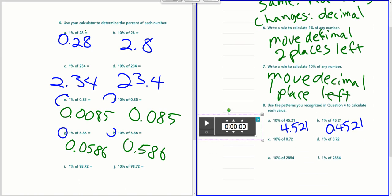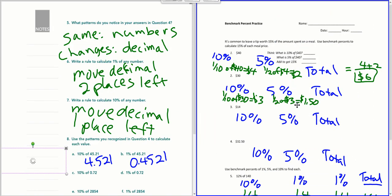And so then we jump to the worksheet. Skipped over a few pages in the book. But basically what we're doing is we're using these benchmark percents and putting them together to figure out numbers that we don't have benchmark percents for. For example, 15. So I want to find 10% of 40 and 5% of 40. And then I want to put that together because that's going to be my 15%.